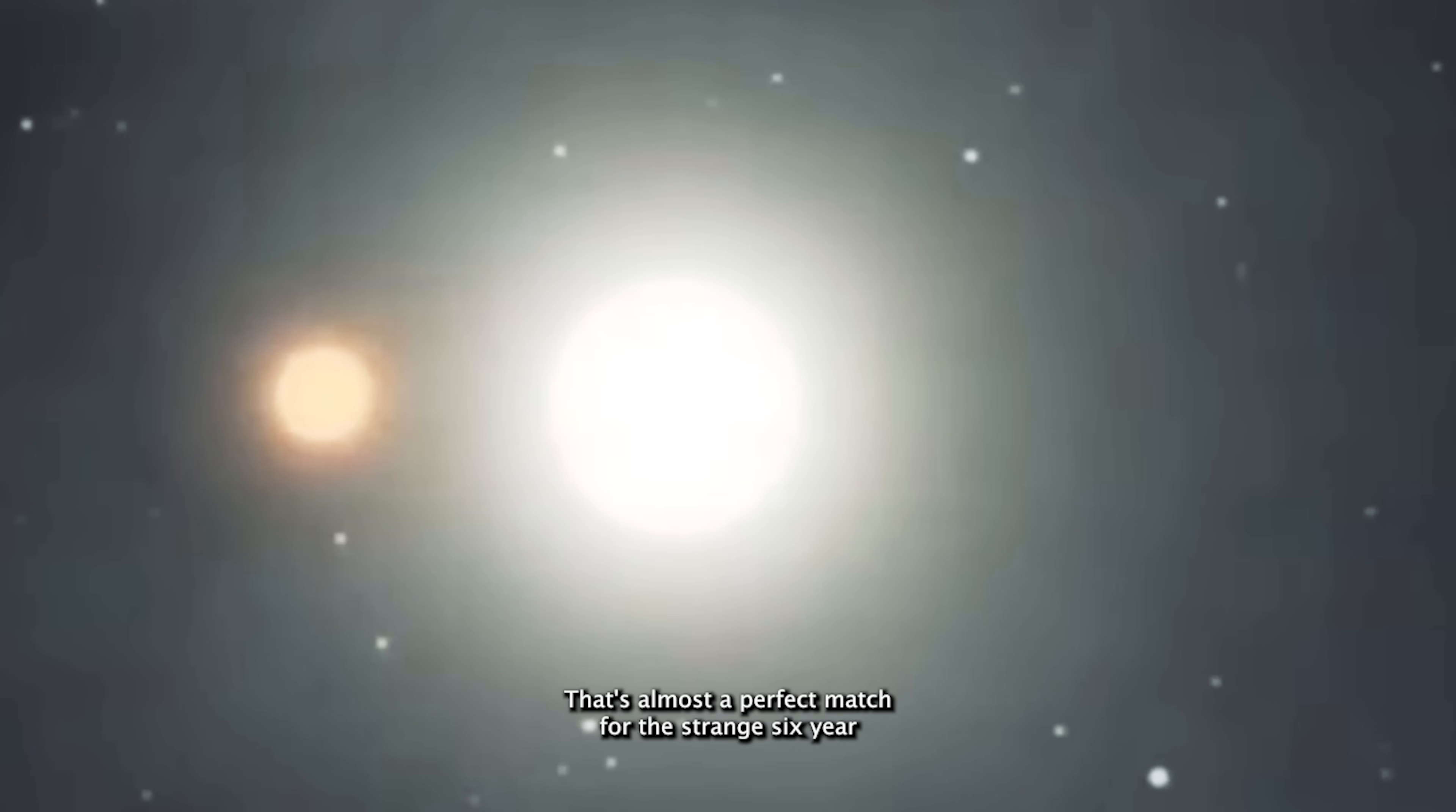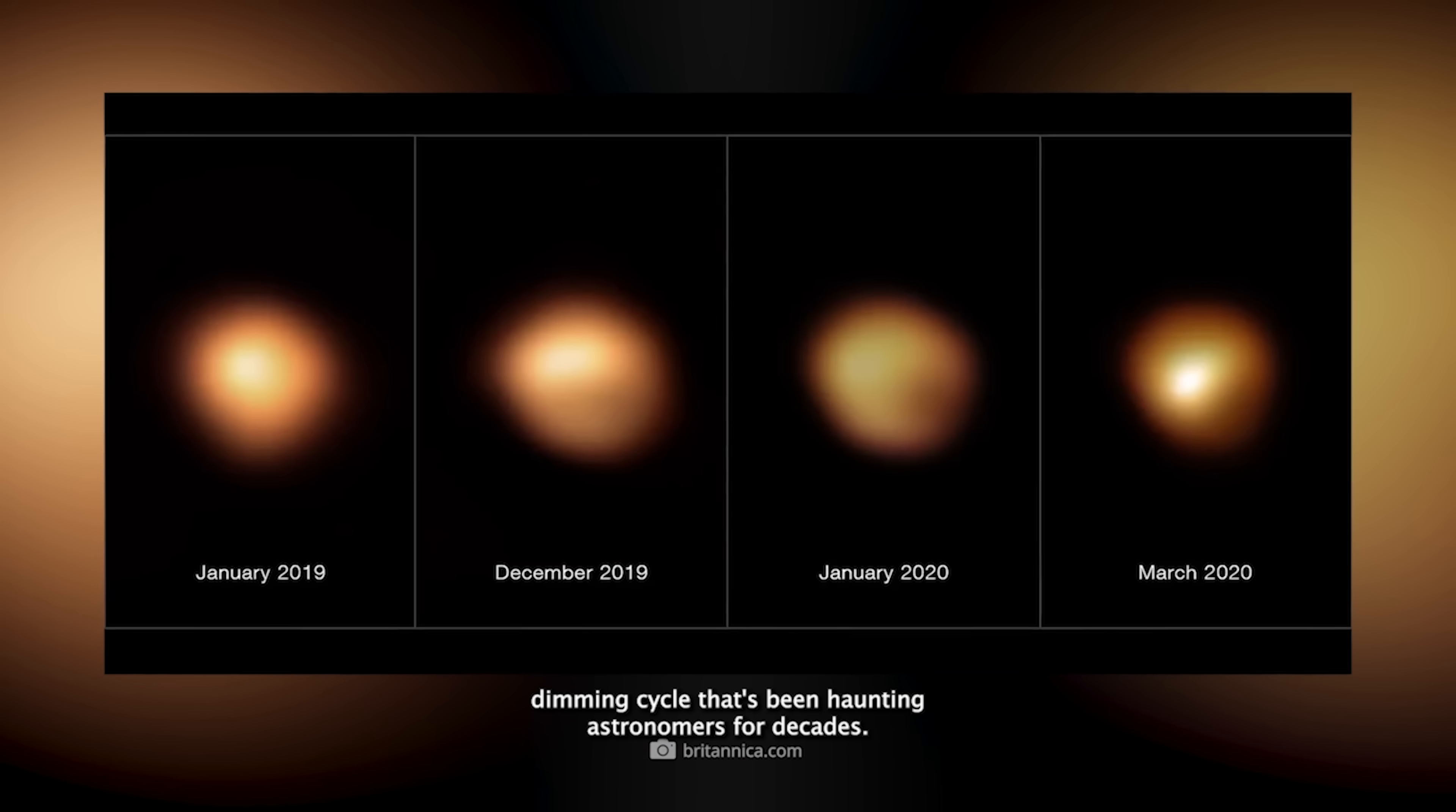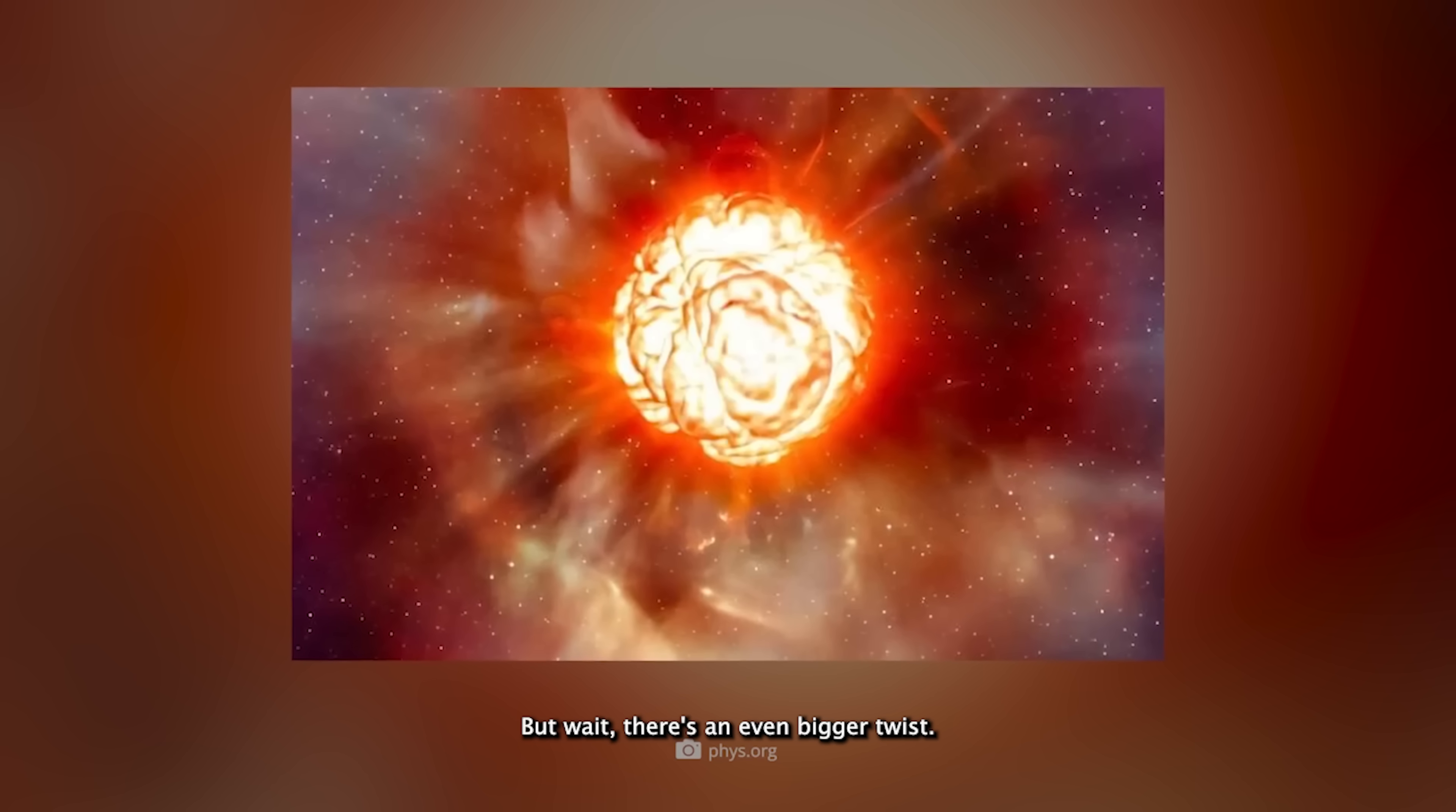Sawha completes one lap around Betelgeuse every 5.94 years. That's almost a perfect match for the strange six-year dimming cycle that's been haunting astronomers for decades. But wait, there's an even bigger twist.